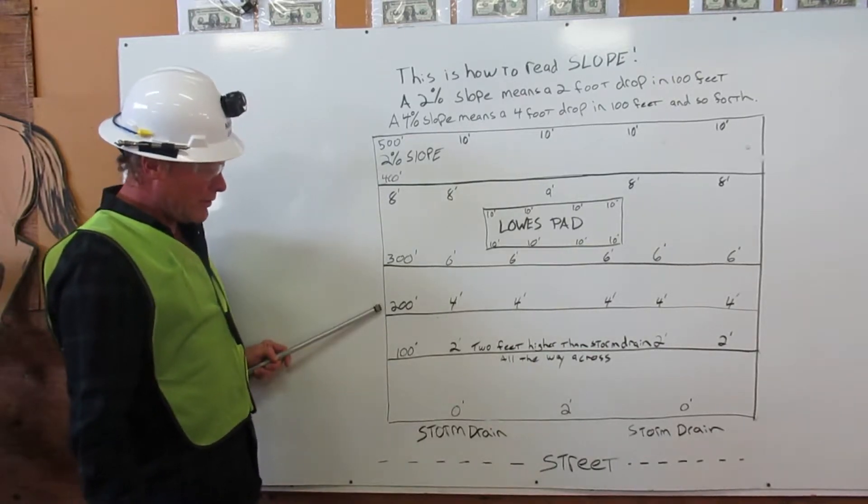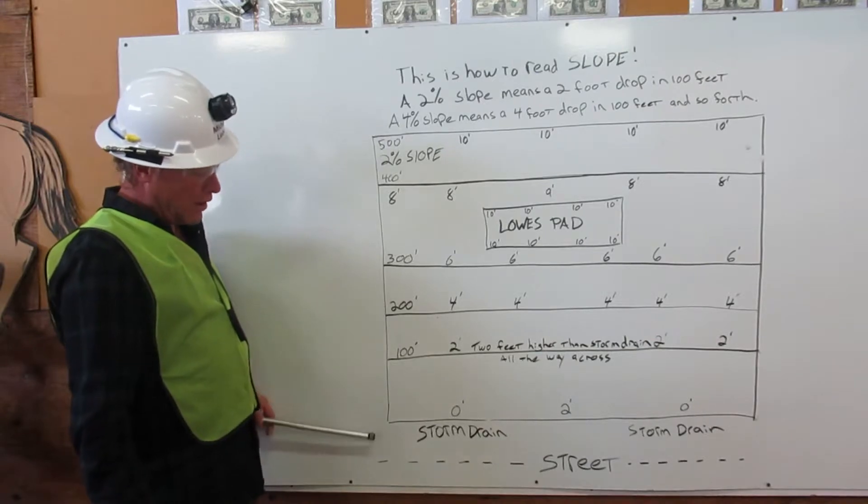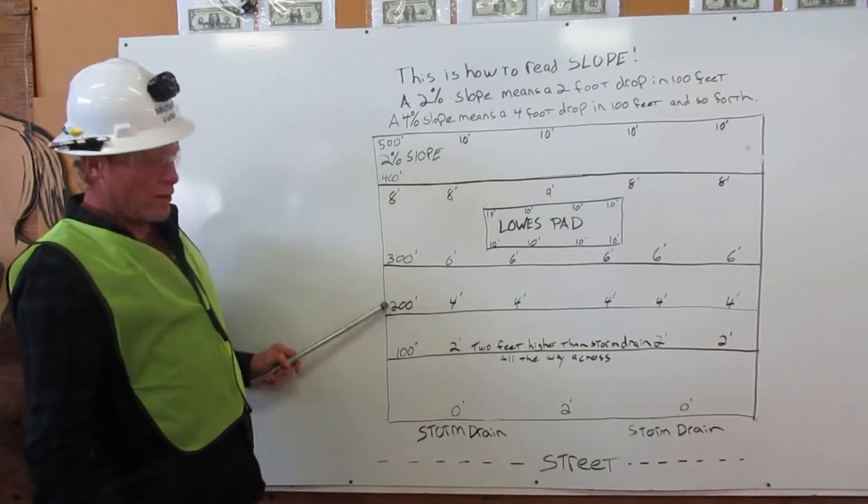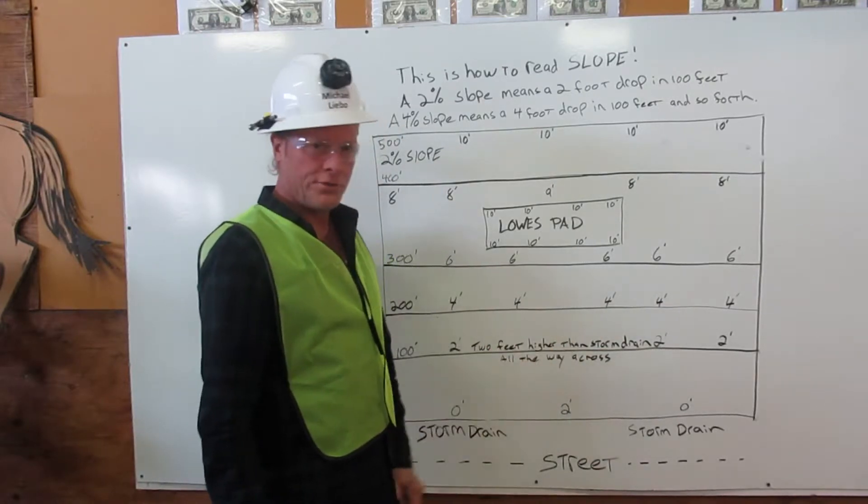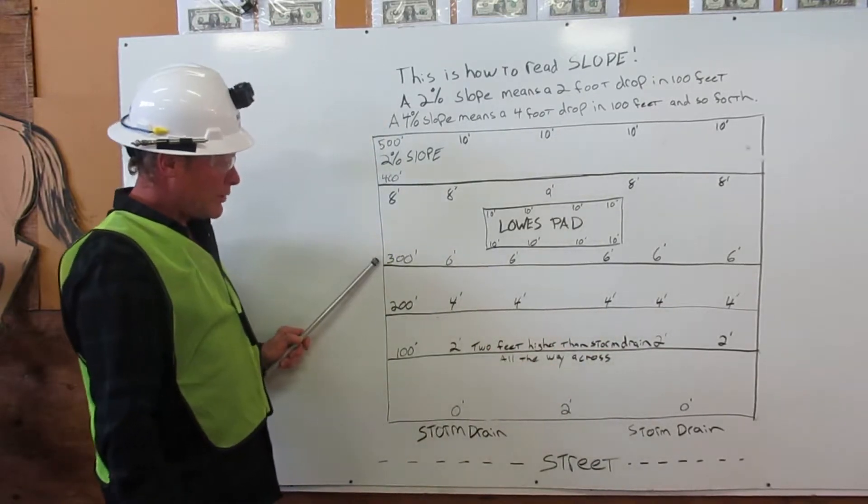At 200 feet from the street, the soil level is four feet higher all the way across. At 300 feet, it's six feet higher all the way across.